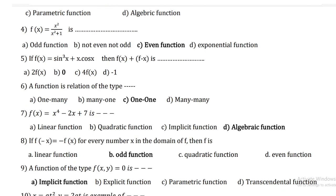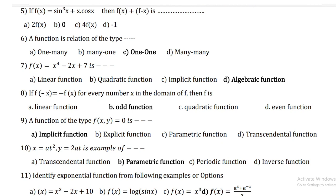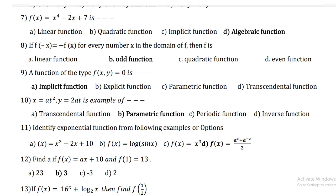A function is a relation of the 1-to-1 type. f(x) = x⁴ − 2x + 7 is an algebraic function. If f(−x) = −f(x) for every x in the domain of f, then f is an odd function. A function of the type f(x, y) = 0 is an implicit function. The example x = 8t², y = 2·8t is a parametric function.